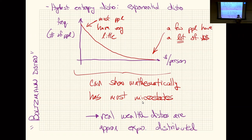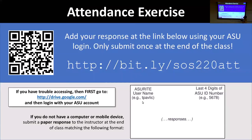That's what I want to leave you with today. We didn't talk about information theory, but we'll come back to that later in the semester. There will be information theory questions on the midterm. For now, the attendance question is: how many different ways can everyone have the exact same amount of money in their wallet?